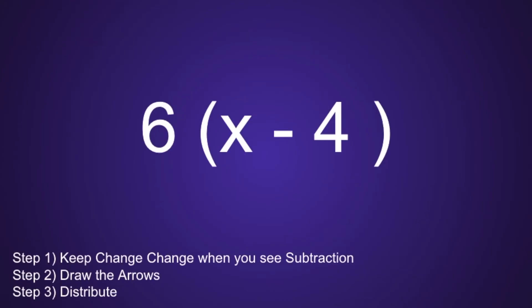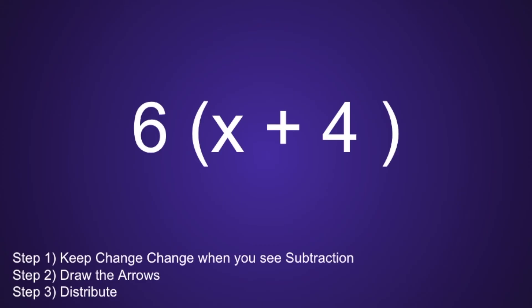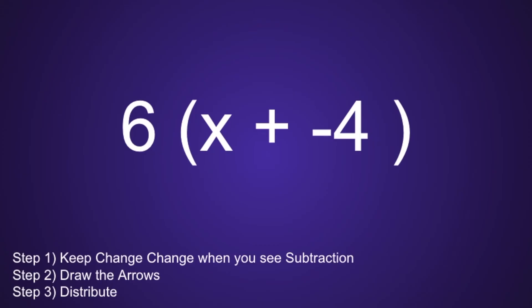So let's head back to the problem: 6 times the quantity x minus 4. Since we have subtraction, we are going to apply keep change change inside the parentheses. So we're going to keep the x the same, change the minus sign to a plus sign, and the opposite of a positive 4 is a negative 4. And now we can move on to step number 2: draw the arrows. Now that we have our arrows, we can move on to step 3, which is to distribute or multiply that outside number by both the inside terms.